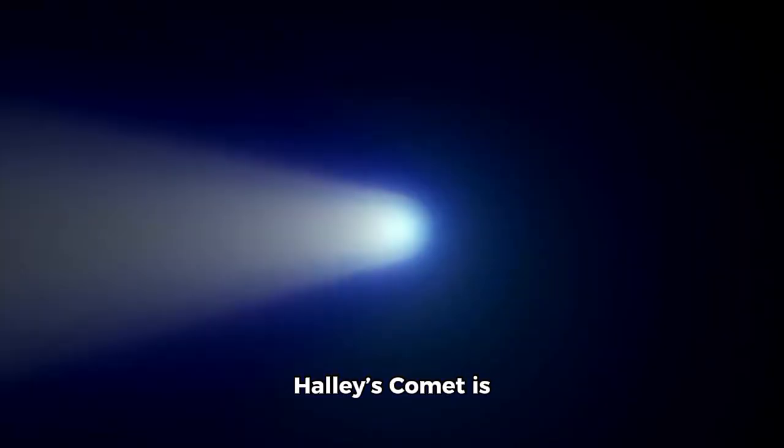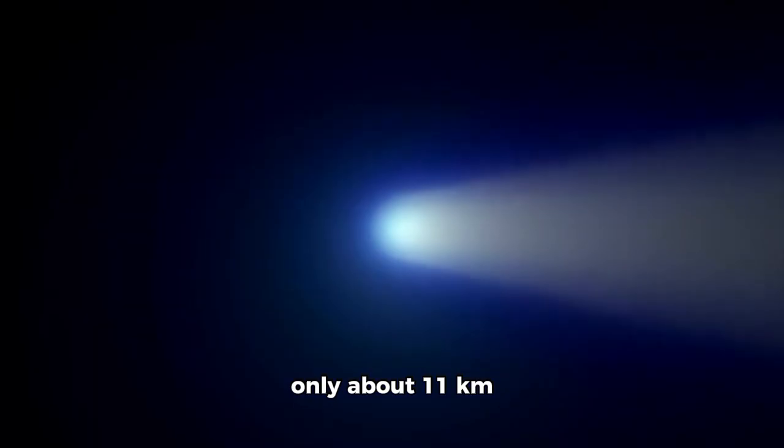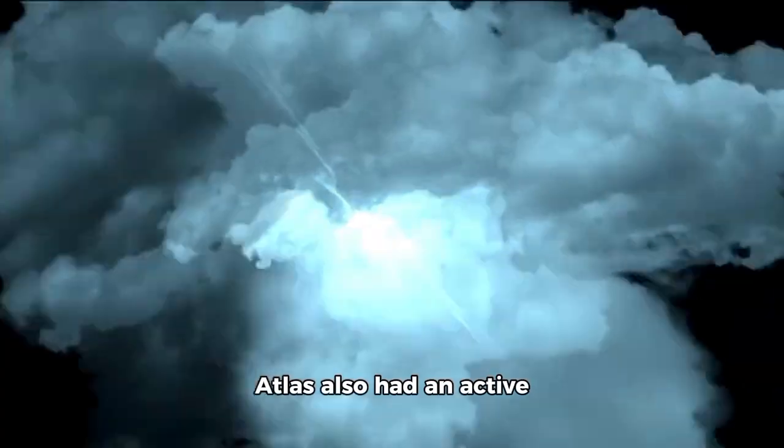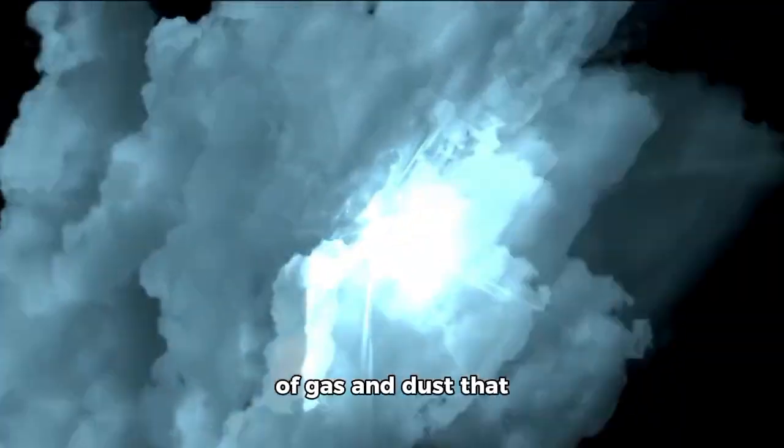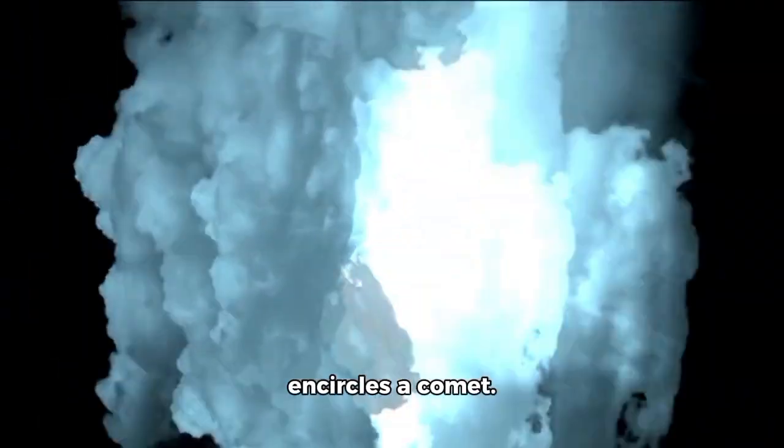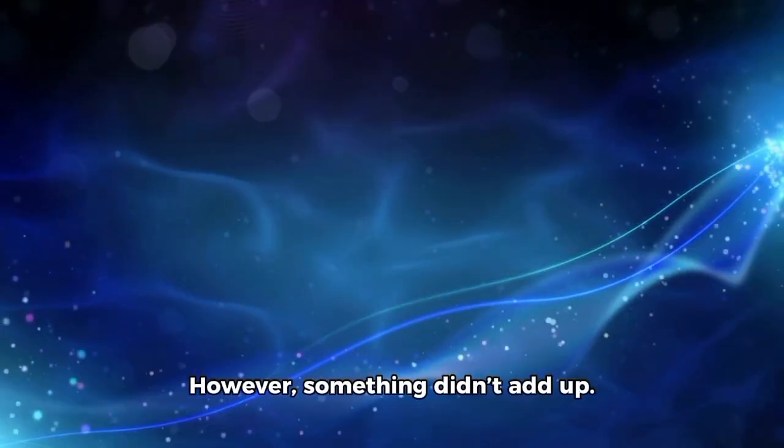For comparison, Halley's comet is only about 11 kilometers across, and it is already considered huge. Atlas also had an active coma, the glowing cloud of gas and dust that encircles a comet. However, something didn't add up.